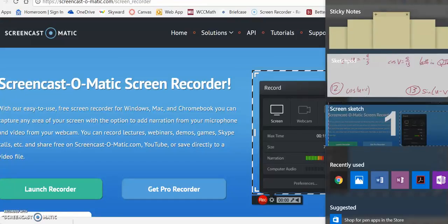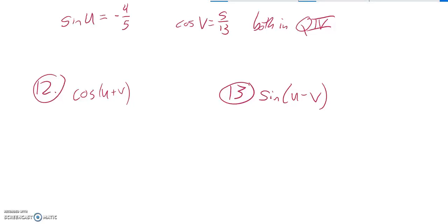We're going to do problems 12 and 13 together since they have the same initial conditions. I have these two angles, u and v. They both terminate in quadrant 4. I want to know what the cosine is if I add the angles together, and I want to know what the sine is if I subtract the angles from each other, u minus v.